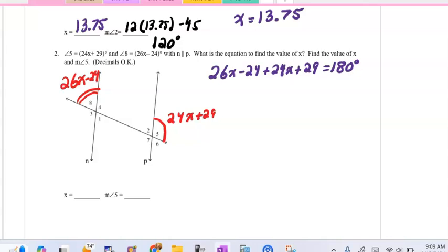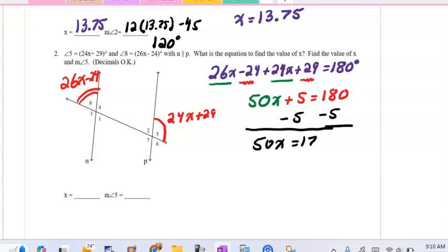Then we want to combine like terms. When you put the 26 and the 24x together, using my calculator, we get 50x. Then you could combine the minus 24 and the positive 29. That's plus 5 is equal to 180. We'll subtract 5 from both sides, so 50x is 175. Dividing that on my calculator, we will get x to be 3.5. We're going to divide both sides by 50, so x is 3.5.